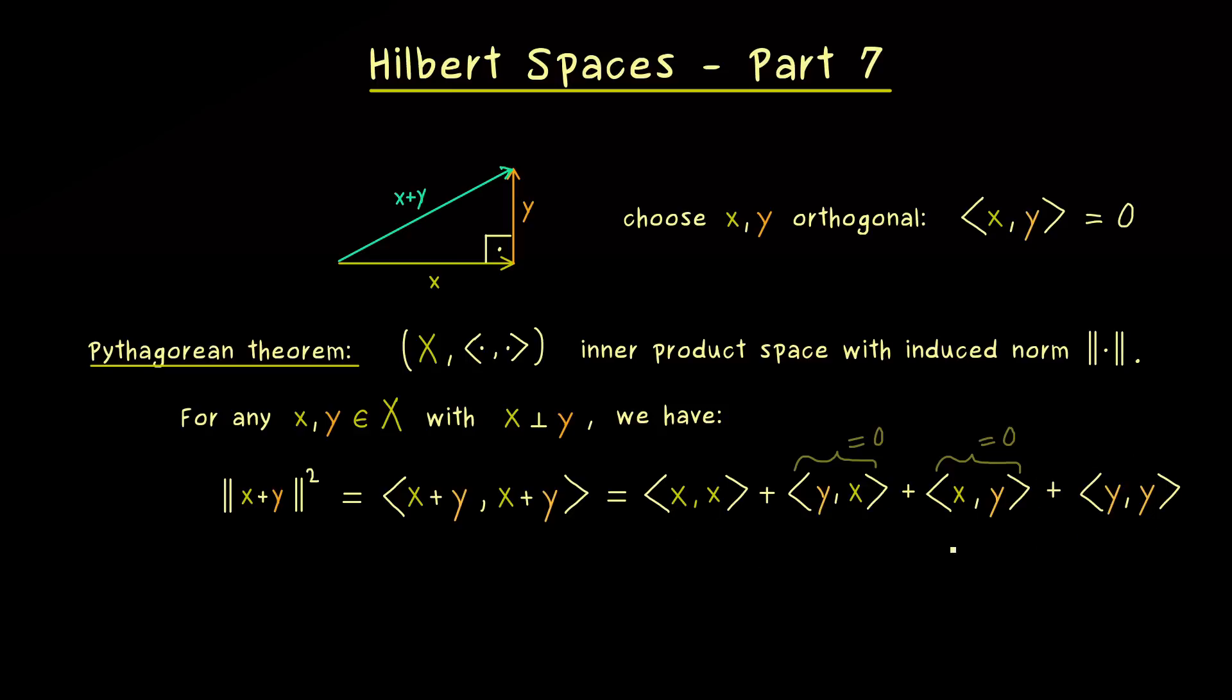So only the two inner products ⟨x,x⟩ and ⟨y,y⟩ remain. And these can be rewritten with the norm squared again. So we get the length of x squared plus the length of y squared. And that's it. This is the general Pythagorean theorem in inner product spaces.